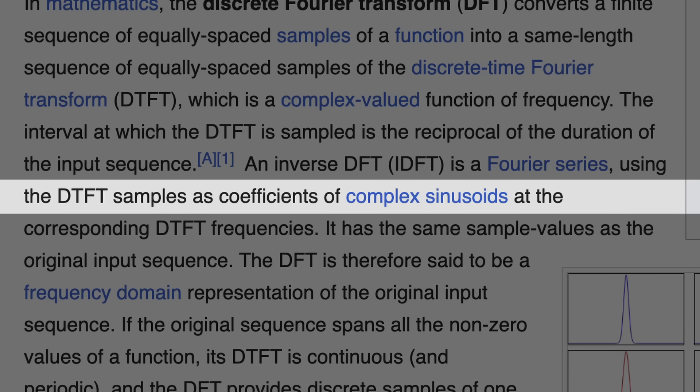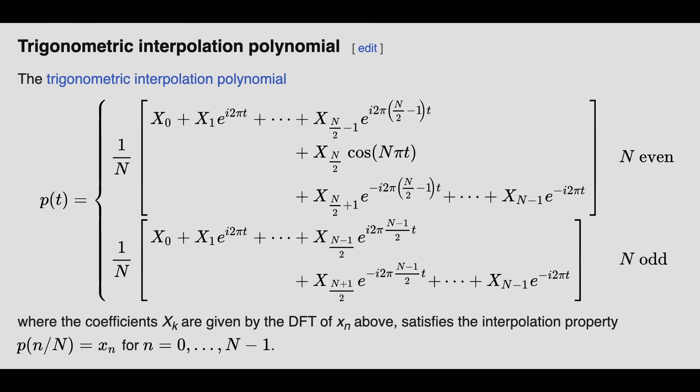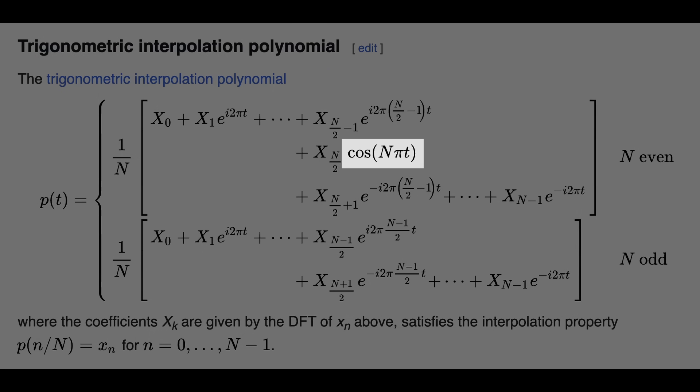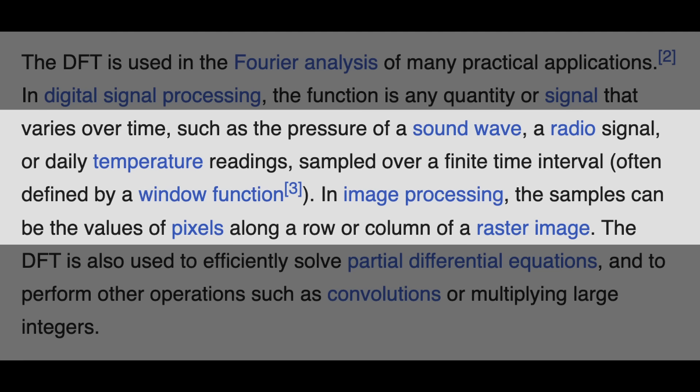Despite mentioning sinusoids several times in the introductory sections, and the entire algorithm being based on them, the first time a sine or cosine appears is in this monstrosity of a formula further down the page. According to the introduction, use cases for the DFT include analyzing sound waves, radio signals, temperature readings, and image processing.